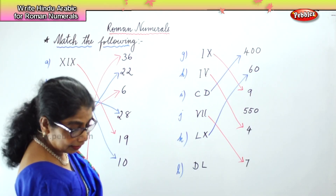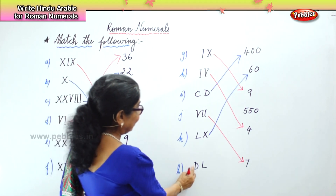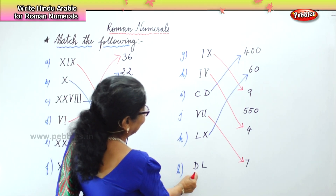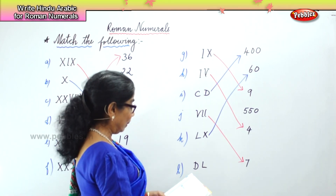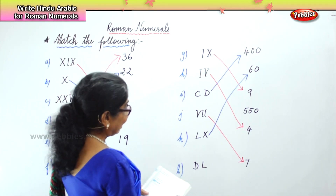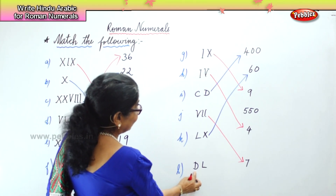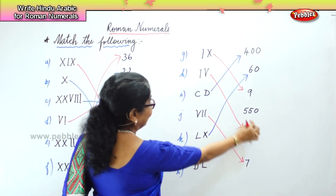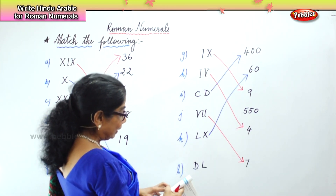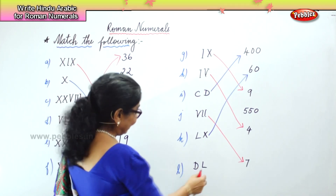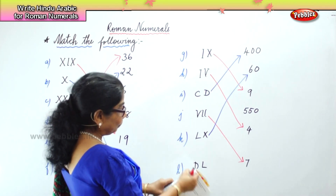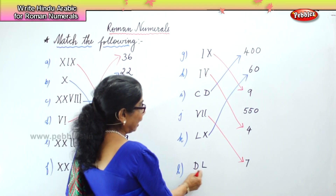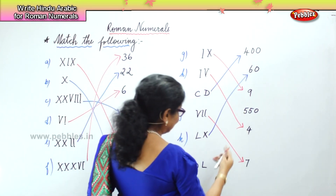And then finally we have here D which is 500, and L, because DL. L is 50. 500 plus 50 is 550. So D is 500 and L is 50, 500 plus 50 equals 550.